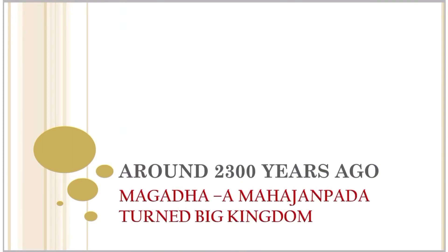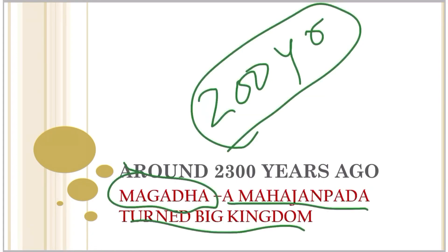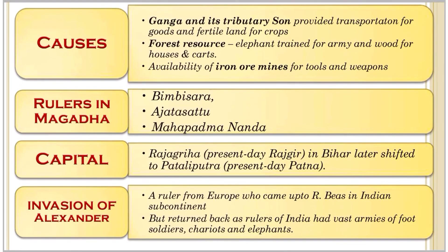Moving forward to around 2300 years ago, the major Mahajanapada that developed significantly in this period was Magadha, which grew into a very big kingdom. We will now examine point by point the causes of Magadha becoming such a powerful kingdom.